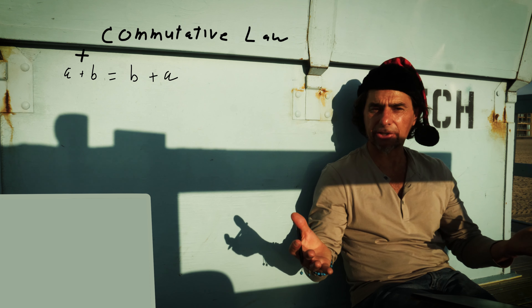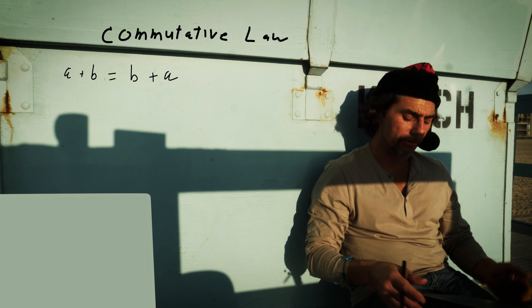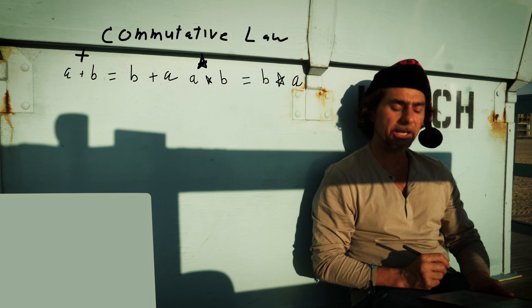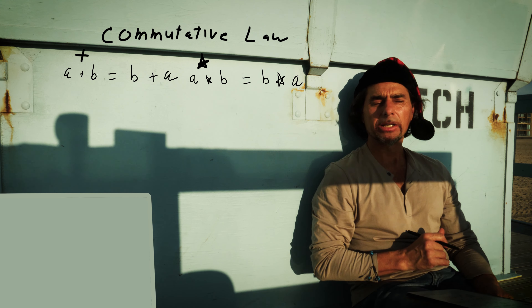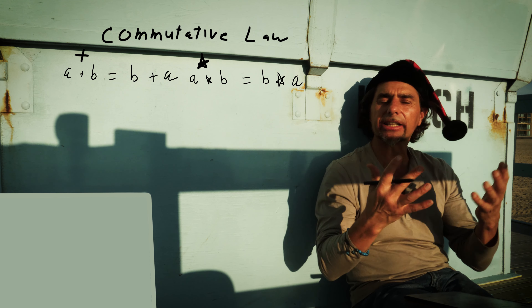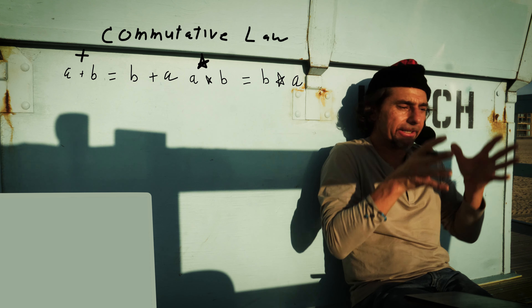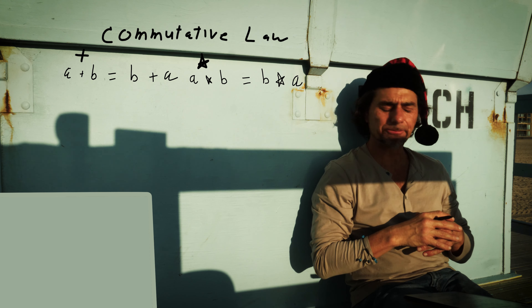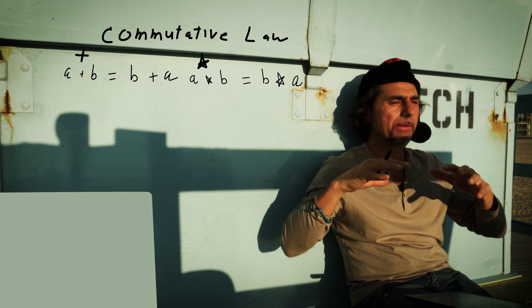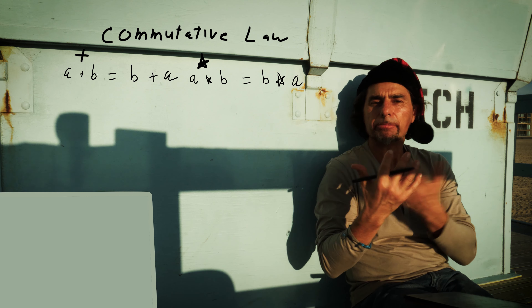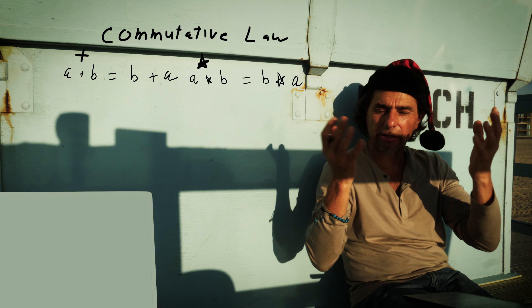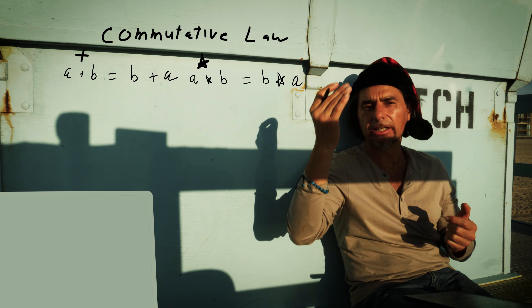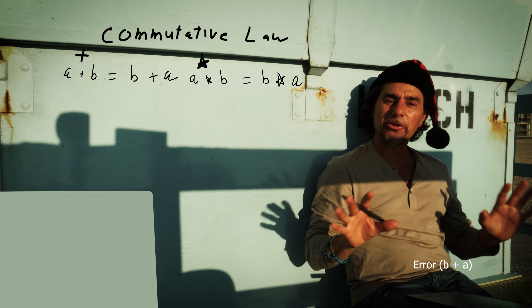Now let's look at the same thing over multiplication, because remember multiplication is another form of addition. If I have a times b, that is also equal to b times a — that's the commutative law over multiplication. Therefore it doesn't matter what order you multiply things; you're going to get the same result. This may seem trivial in a simple case, but later in algebra and calculus you may be multiplying functions or expressions where it's not intuitive. When you boil it all down, a times b is the same as b times a, just as a plus b is the same as b plus a.